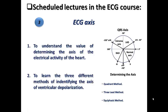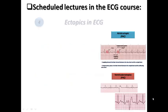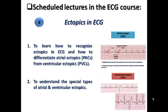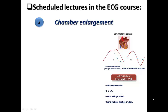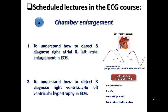Lecture three is the ECG axis — I chose to give a separate lecture for this because it is one of the difficult issues in ECG, hard to understand for many cardiologists. It covers the value of determining the axis of the heart's electrical activity and three different methods of identifying the axis of ventricular depolarization. Lecture four covers ectopics in ECG — how to recognize ectopics and differentiate atrial from ventricular ectopics, including special types of each. Lecture five covers chamber enlargement — detecting and diagnosing right and left atrial enlargement, as well as right and left ventricular hypertrophy in the ECG.